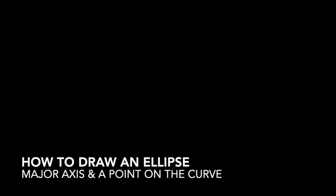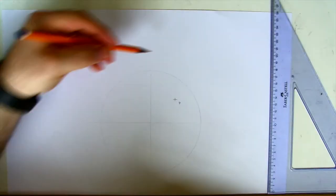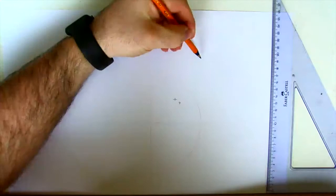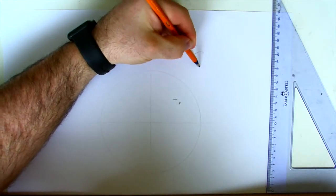This is a quick video on how to draw an ellipse when you're given the major axis as shown and a point on the curve, point P. You can see it's inside the major axis.